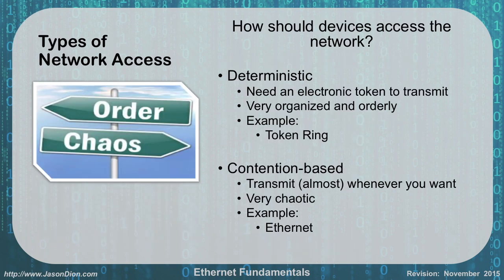With Ethernet, we have to determine how to access the network. There are two ways: deterministic or contention-based. Token ring was deterministic — devices passed an electronic token, and whoever had the token could transmit. Very organized, very orderly. Ethernet, instead, is contention-based — more chaotic, allowing transmission pretty much whenever you want. The problem is if two devices talk at the same time, they talk over each other and neither gets heard, requiring retransmission. It's like that hallway dance where you and someone else keep stepping side to side. Ethernet is a good example of contention-based network access.